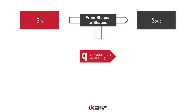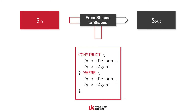The inferred output shapes hold for all possible output graphs produced by this query, as long as the respective input graph conforms to the input shapes. Let's look at a very simple example. This simple construct query filters all X that are instances of type Person and all Y that are instances of type Agent, and builds a new graph consisting only of those X and Y with the same type annotations.